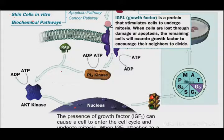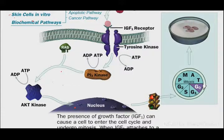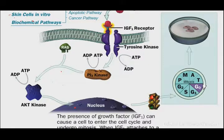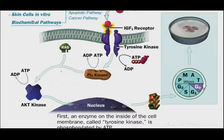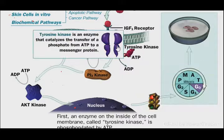When IGF-1 attaches to a cell membrane receptor, it activates a molecular chain reaction. First, an enzyme inside the cell membrane called tyrosine kinase is activated. Here is the tyrosine kinase.